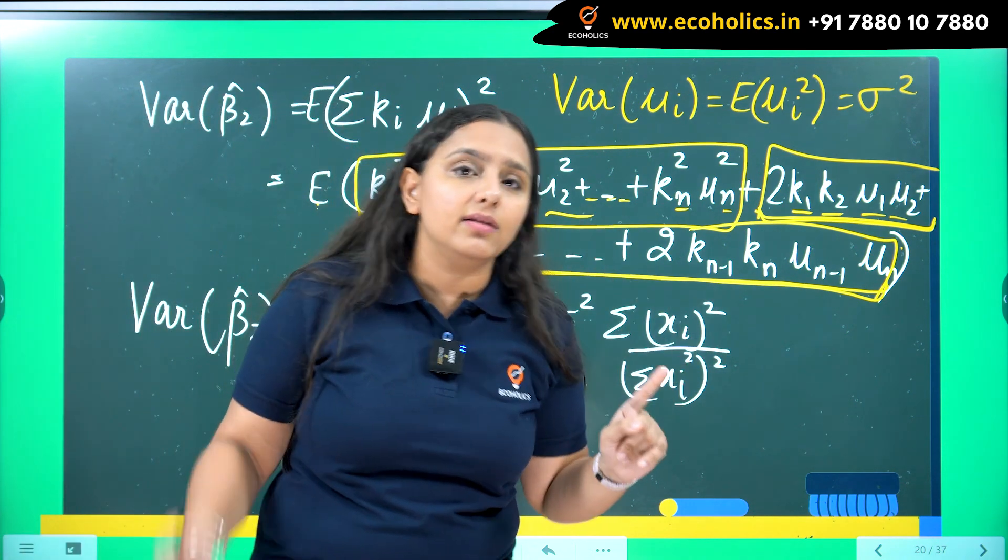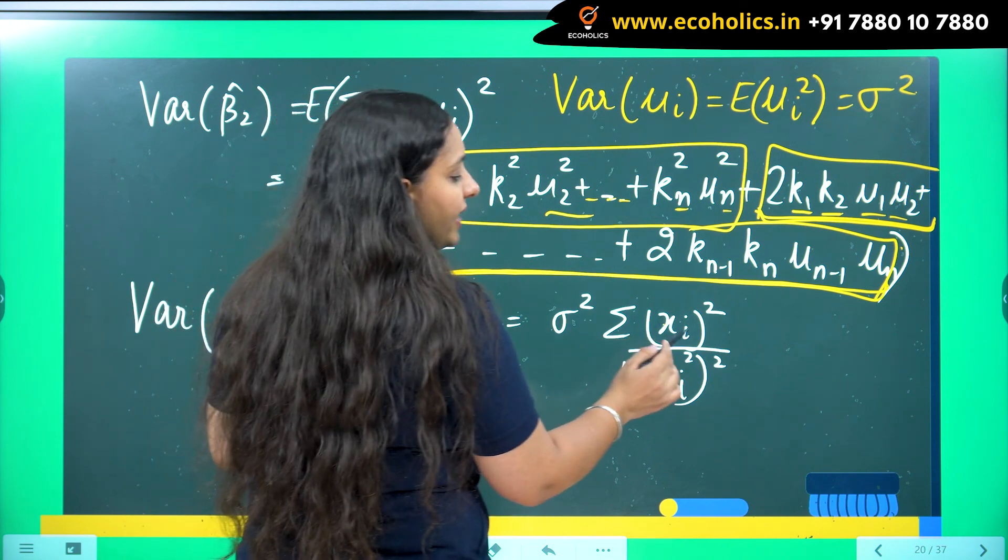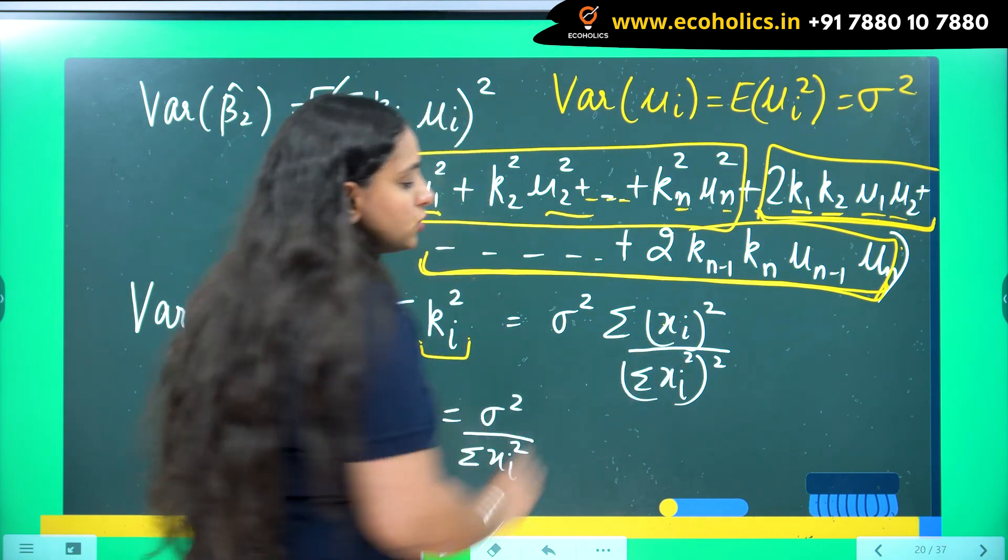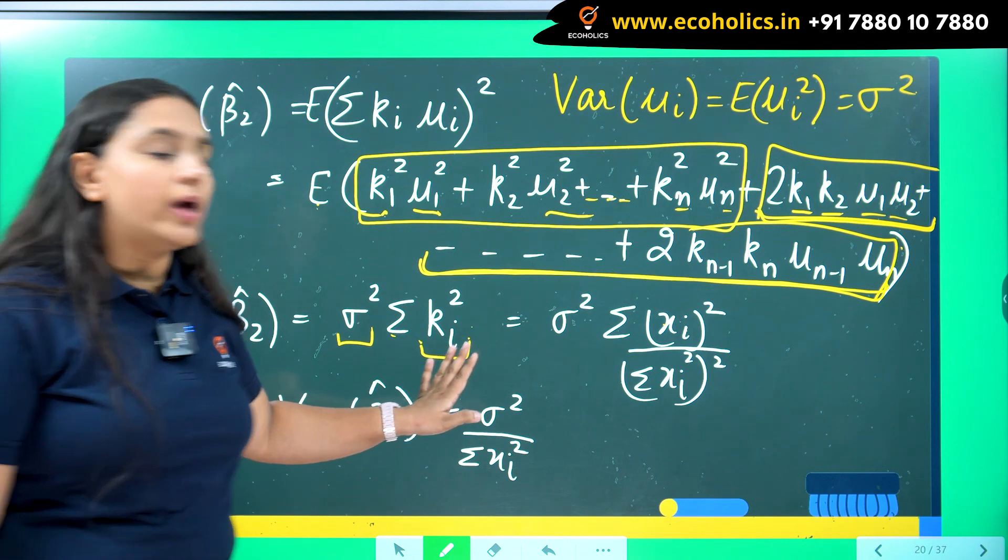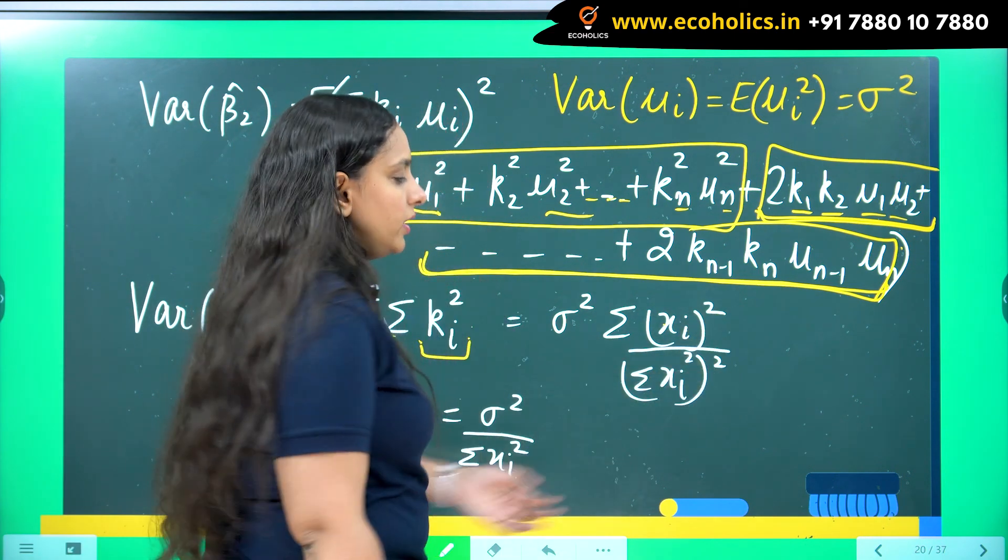We learned that in the linearity video. So k i is going to be equal to x i upon summation x i square. Now I need to do the square of k i. So I have done the square in the numerator and denominator.